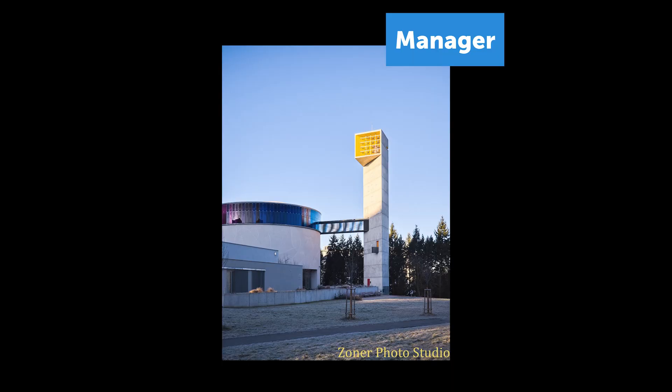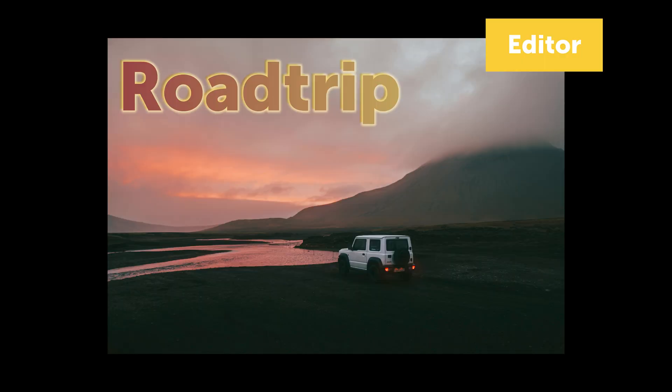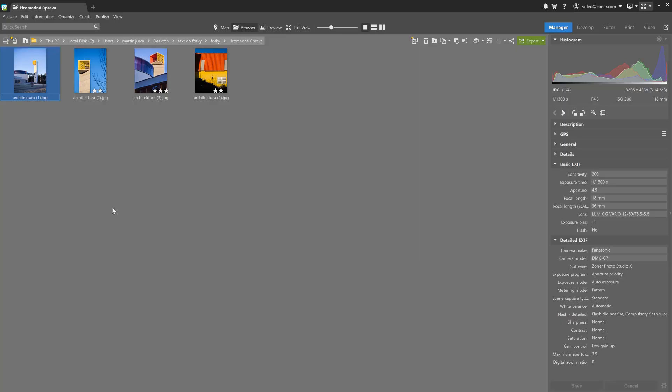If you want to simply add a signature or watermark to one or more photos, use the manager module. But if you want to play around with it just a bit more, like adding an outline, then you should definitely use the develop module. And if you want to apply certain text effects and some magic touches, you're going to have to go to the editor module. Now, if you already know how you plan on using your text, you can skip ahead and go straight to where you need to in the timeline in the video description. So let's look at each module in greater detail.